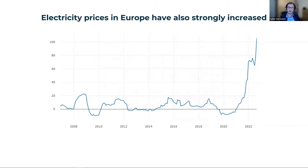This has also had an effect on electricity prices. Electricity prices in Europe are determined by the most expensive production method on the spot market. In the past this was coal due to expensive emission rights, but now it is gas. Because the gas price we saw in the previous slide has exploded, this has led to an enormous increase in electricity prices.